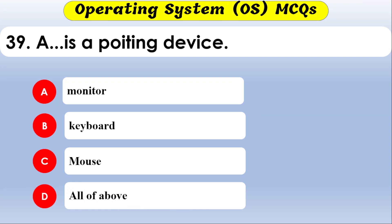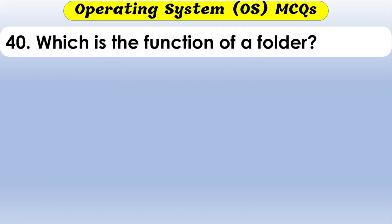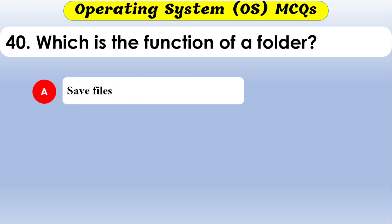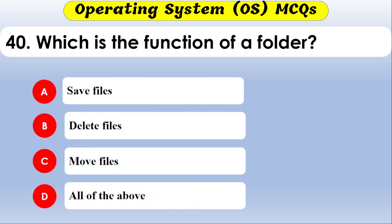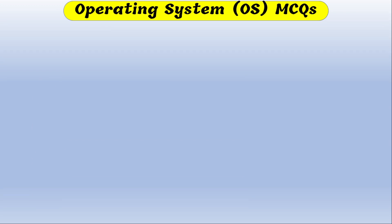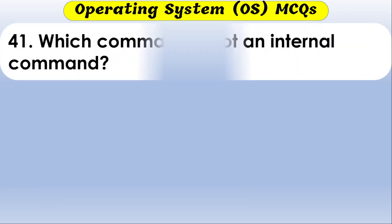A pointing device — the options are monitor, keyboard, and mouse. The correct option is mouse. The function of a folder is to save files, delete files, and move files — the correct option is all of the above.